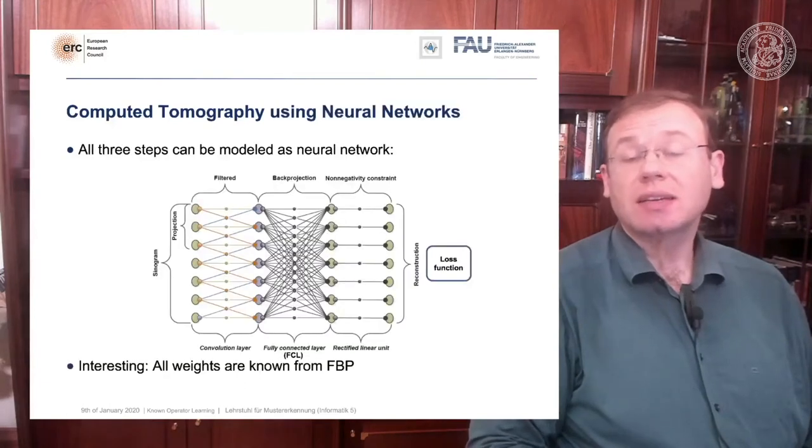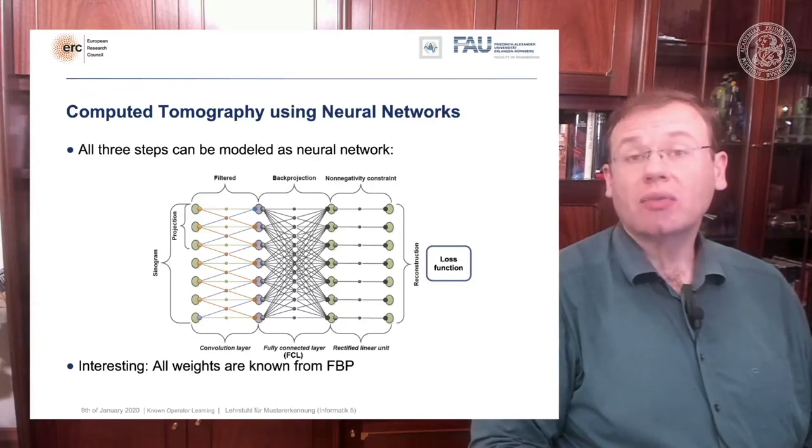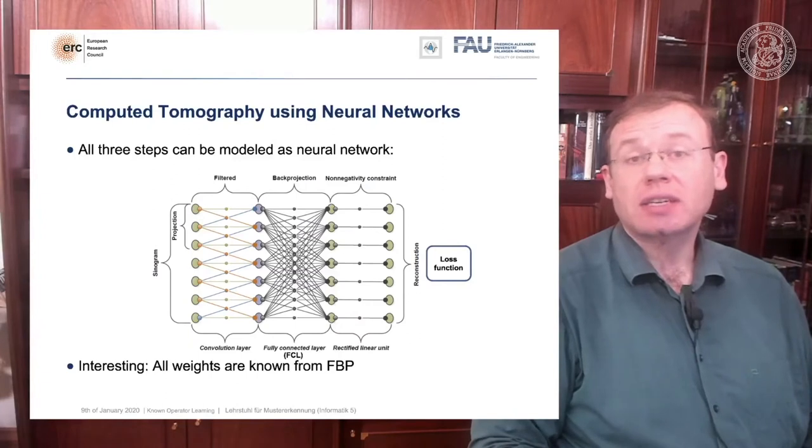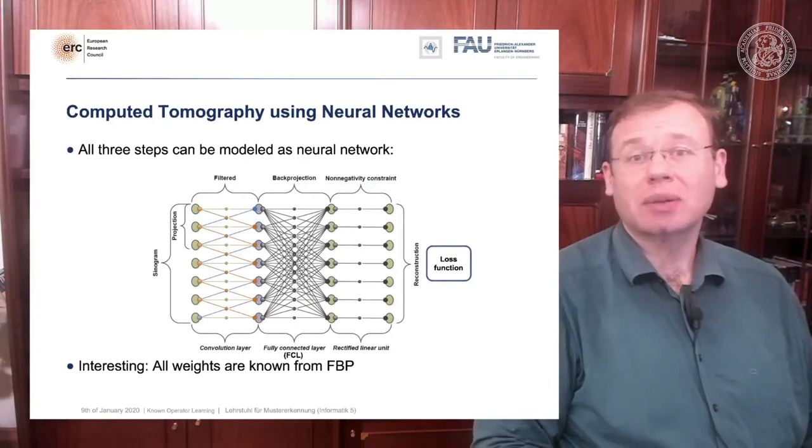This is what we did. We can map everything into a neural network. We start on the left hand side, we put in the sinogram and all of the projections. We have a convolutional layer that is computing the filtered projections. Then we have a back projection that is a fully connected layer, essentially this large matrix A. And then we have the non-negativity constraint. So essentially we can define a neural network that does exactly filtered back projection.